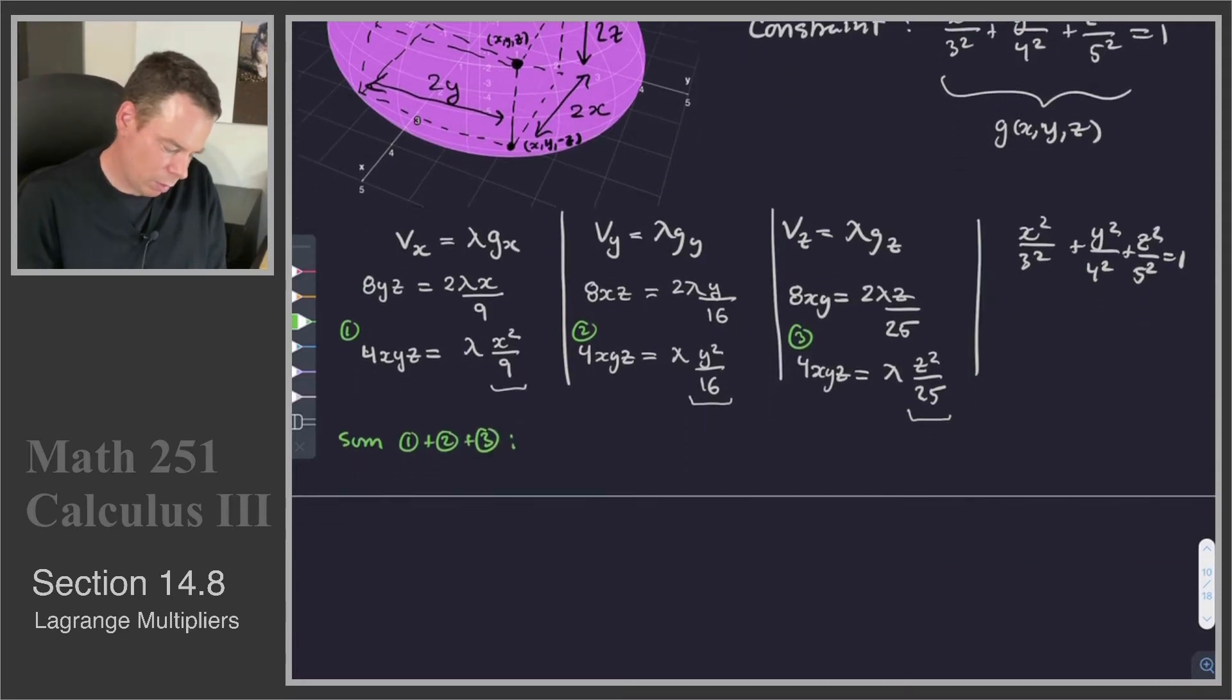And what happens when I sum them all up? I get the left-hand sides all sum up to 12xyz, and the right-hand is λ times (x²/9 + y²/16 + z²/25), but the constraint tells me that adds up to 1, so this just sums up to λ.